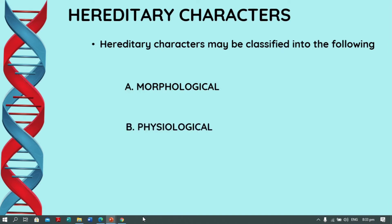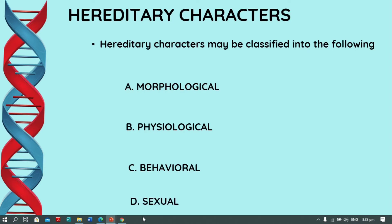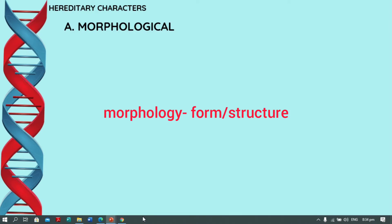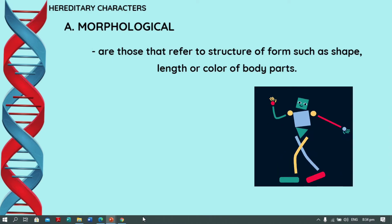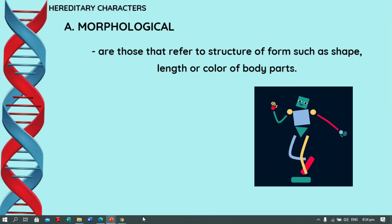Hereditary characters may be classified into four types: A. Morphological, B. Physiological, C. Behavioral, and D. Sexual. Let's start with the morphological character. When we say morphological character, these are those that refer to structure or form, such as shape, length, or color of body parts.